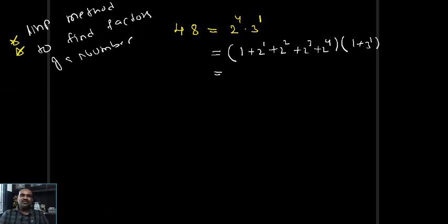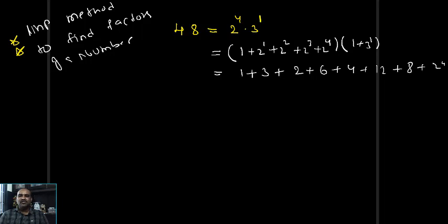Multiplying out: 1×1=1, 1×3=3, 2×1=2, 2×3=6, 4×1=4, 4×3=12, 8×1=8, 8×3=24, 16×1=16, 16×3=48. The interesting result is that after multiplying these two brackets you get a big expression containing 10 terms: 1, 3, 2, 6, 4, 12, 8, 24, 16, 48 — and those are exactly the factors of 48.